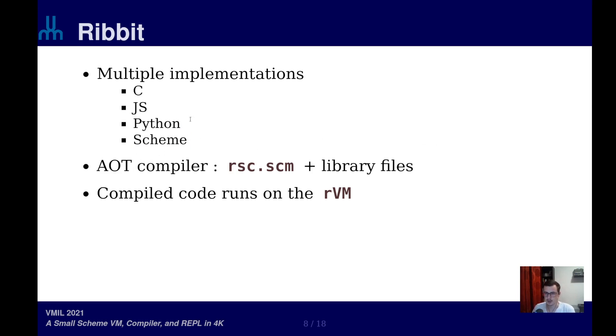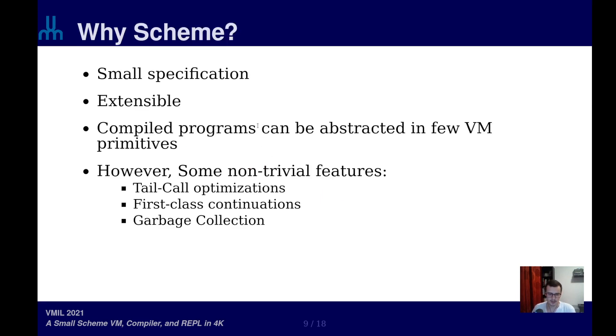Of course, the ahead-of-time compiler as well, all the library files are written in Scheme. You may be wondering why Scheme is the language we chose to write a VM for, and there's many reasons, but it boils down to the fact that Scheme is a small specification and it is quite simple. And this small specification translates well to a simple virtual machine with a few primitive operations and primitive functions required for it to execute properly.